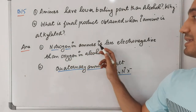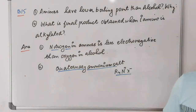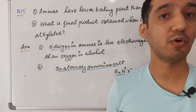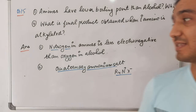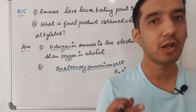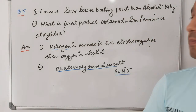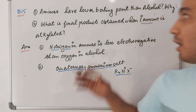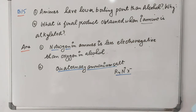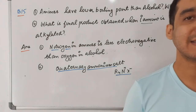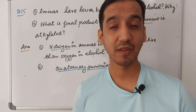Question fifteen: why do amines have lower boiling points than alcohols? Nitrogen in amines is less electronegative than oxygen in alcohols. As a result, the hydrogen bonds formed by nitrogen in amines are not as strong as those formed by oxygen in alcohols, giving amines lower boiling points. Also, when primary amines are alkylated, the final product is a quaternary ammonium salt, R₄N⁺X⁻.